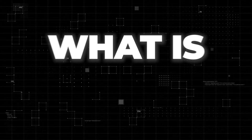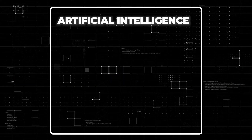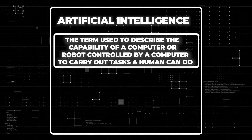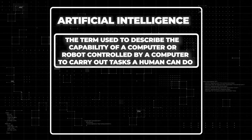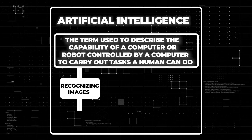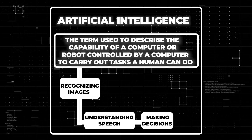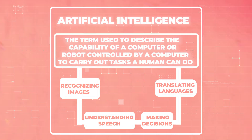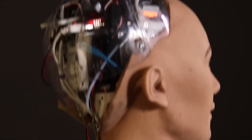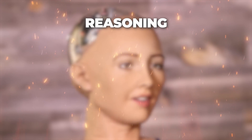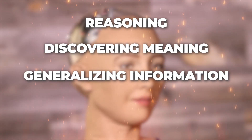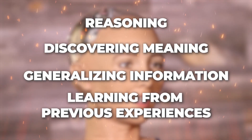We will start with the basic question: what exactly is artificial intelligence? Artificial intelligence, or AI, is the term used to describe the capability of a computer or robot controlled by a computer to carry out tasks a human can do. These tasks encompass various abilities like recognizing images, understanding speech, making decisions, and translating languages. The ultimate goal of AI is to develop systems that can mimic human-like intellectual processes, including reasoning, discovering meaning, generalizing information, and learning from previous experiences.